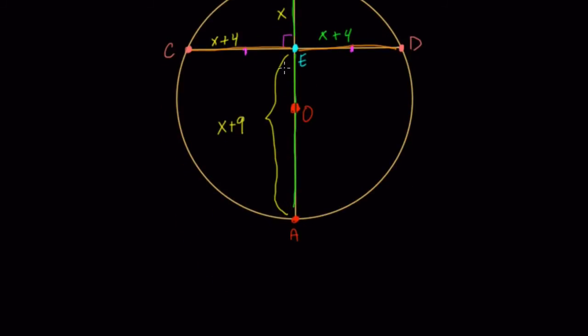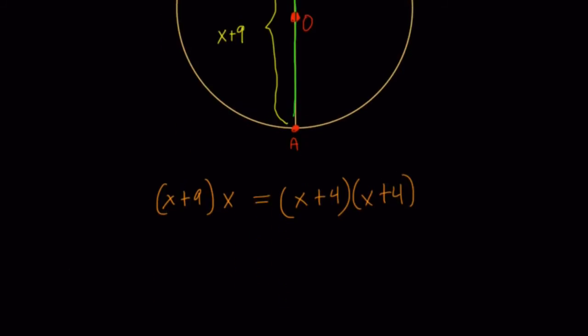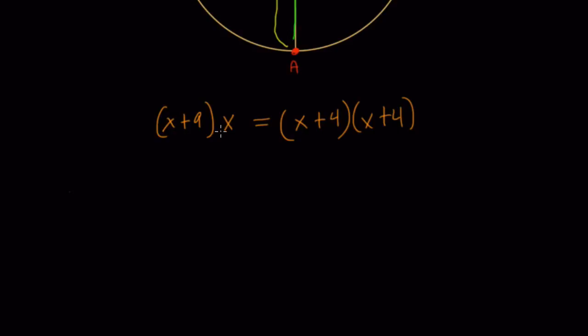The product AE times EB, so that's X plus 9 times X, it's going to be equal to the product of X plus 4 times X plus 4. So now our job is to solve for X in this equation. So let's do that. In the left side here, we have X times X, that's X squared, X times 9, that's 9X. On the right-hand side, we distribute X times X is X squared, X times 4, that's 4X, and then another 4X, and then lastly, 4 times 4 is 16.